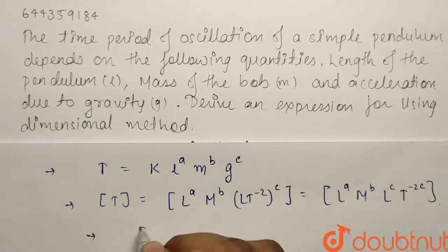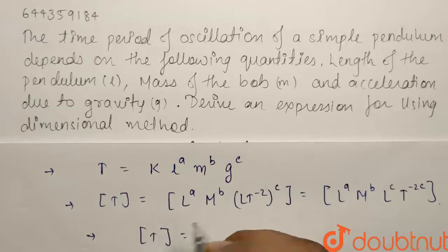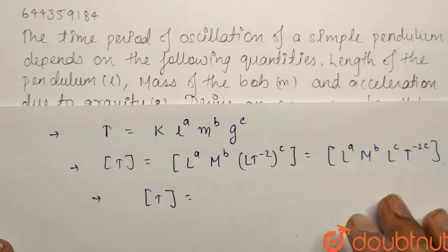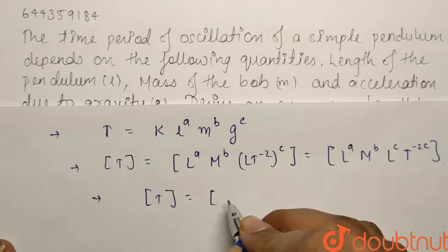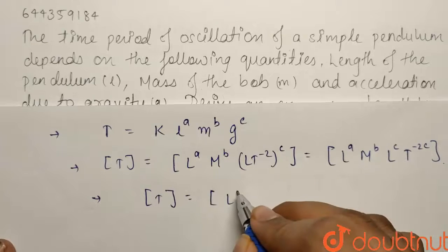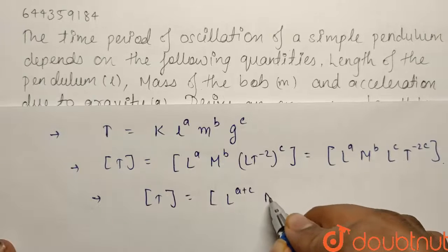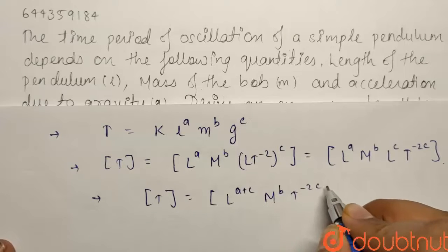So we get that the dimension of time period will be equals to the dimension of RHS that is dimension of L to the power a plus c, M to the power b, and T to the power minus 2c.